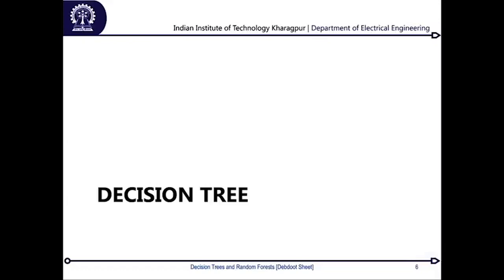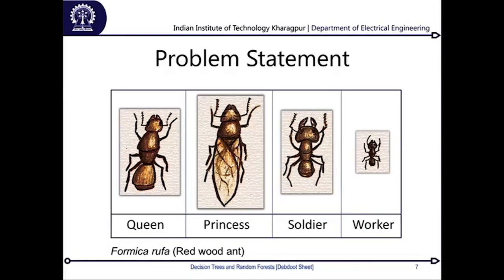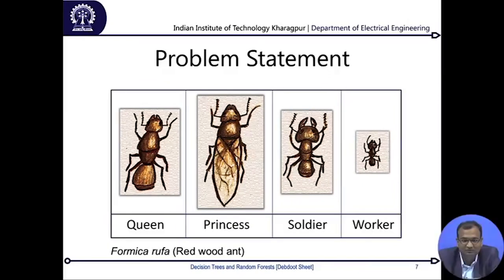A decision tree has the word 'tree' in it — it does not look like a banyan tree, but it is some sort of a tree. Going back to your programming and data structures background, you may have heard of a binary tree or implemented a binary search tree. We use a similar concept here, except instead of searching, the left or right node takes a yes-or-no decision — much like how humans make decisions when faced with complex scenarios. Let us start with a simple problem from taxonomy: redwood ants. They are of four types — workers, soldiers, princesses, and queens.